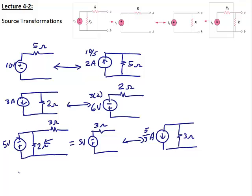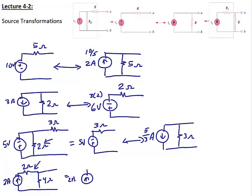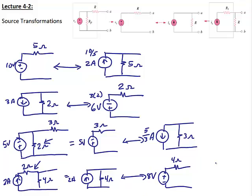How about one more example. We have a 2-amp current source in series with a 2-ohm resistor, in parallel with a 4-ohm resistor. The 2-ohm resistor has the same current as the current source, so the 2-ohm resistor is a dummy resistor. So this can be written as 2 amps in parallel with 4 ohms. When I perform the source transformation, I have a voltage source in series with a resistor. The resistor is still 4 ohms, and the value of the voltage source is 2 times 4, or 8 volts.